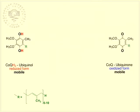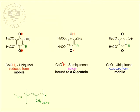Ubiquinol and ubiquinone are mobile components of the respiratory chain which are not anchored to proteins, but the semi-quinone form is bound to a Q protein located on both sides of the inner mitochondrial membrane.